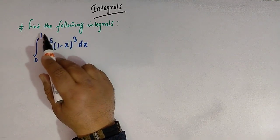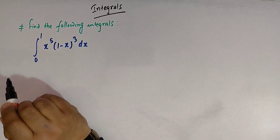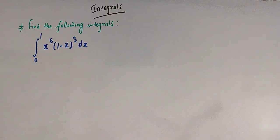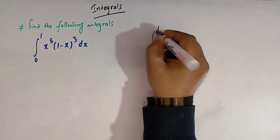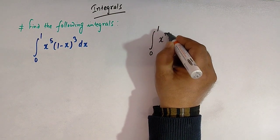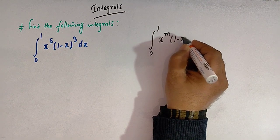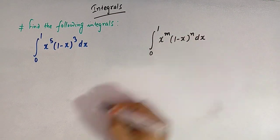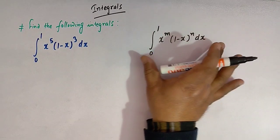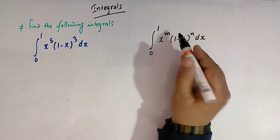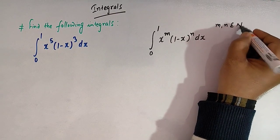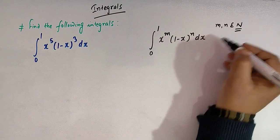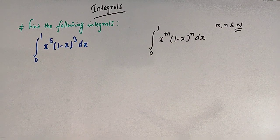To evaluate this type of integral, let us first see the general integral. The general integral is from 0 to 1 of x raised to m times 1 minus x raised to n dx, where m and n are natural numbers.